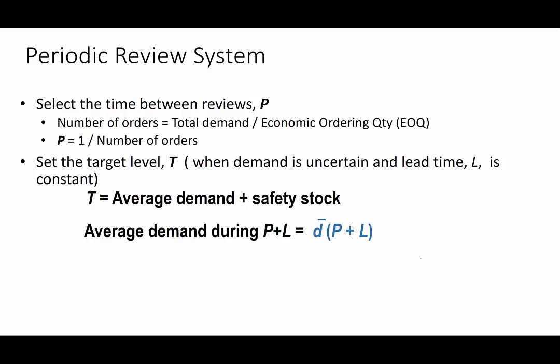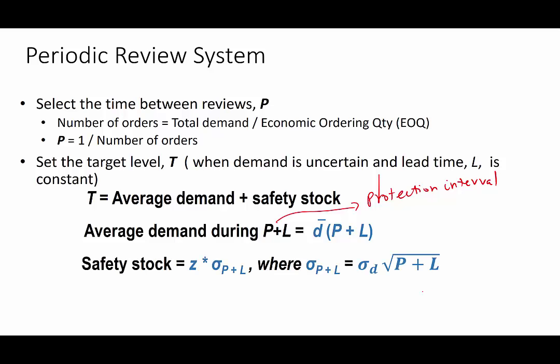The average demand during P plus L — also called the protection interval — is D-bar times P plus L, where D-bar is the average demand per time period. The safety stock is Z times sigma, the standard deviation of demand during P plus L, which can be determined as the standard deviation per time period times the square root of P plus L.